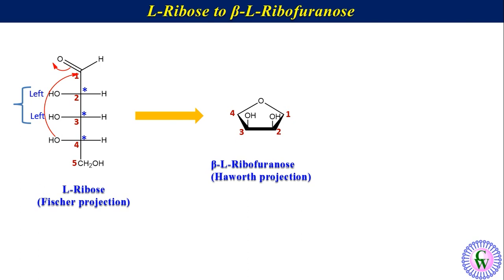Now consider C4, which is the downmost chiral carbon. The OH on C4 is also on the left, so CH₂OH will be down. Finally, consider C1 — since the anomer is beta, OH will be up. In this way, we can convert the Fischer projection of any sugar into the Haworth projection.